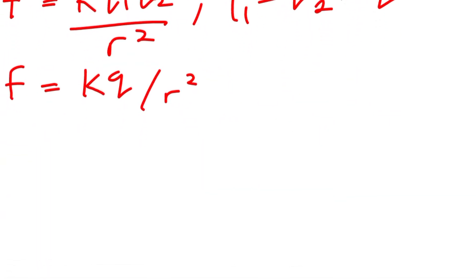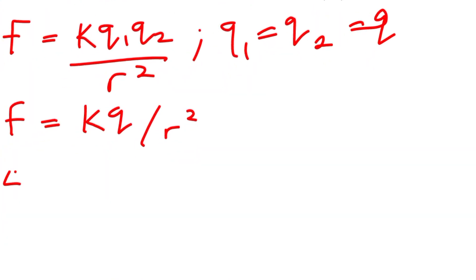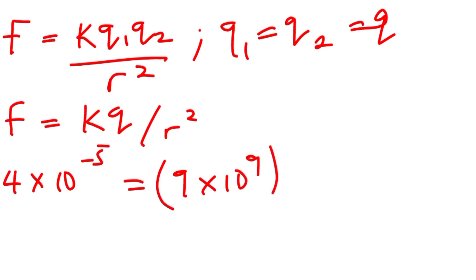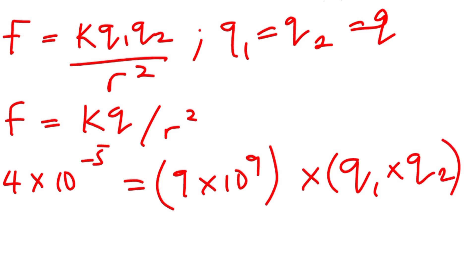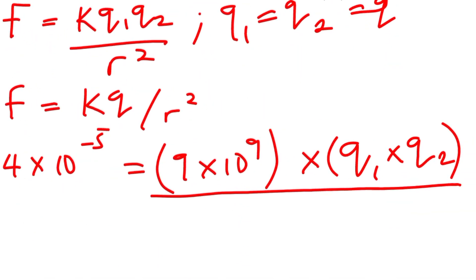Now let's substitute the values. Four times ten to the power of negative five equals k, which is nine times ten to the power of nine, times q squared, divided by r squared, which is three times ten to the power of negative two, all squared. Since q1 equals q2 equals q, q times q gives us q squared.